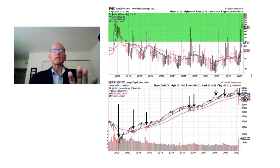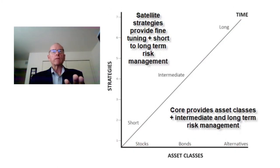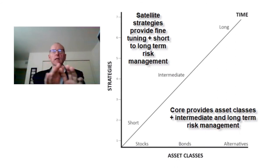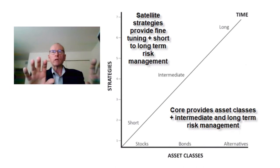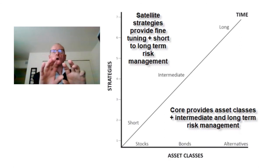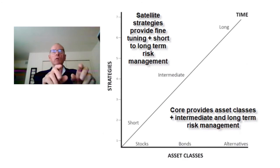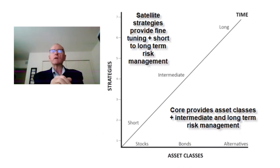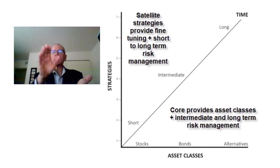I wanted to bring this back into context with what we do here at Flexible Plan. One of the things we do here is we understand the fear gauge and how portfolios move. That's why we construct them with all three asset classes — you can see that along the bottom of the graph. We also add multiple rule sets, shown on the upper right-hand side of the graph. And we're very keen on having all three timelines considered when we craft a portfolio: short term, intermediate term, and long term.